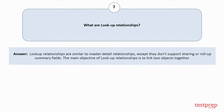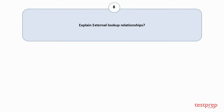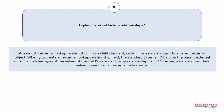Question number eight: Explain external lookup relationships. An external lookup relationship links a child standard, custom, or external object to a parent external object. When you create an external lookup relationship field, the standard external ID field on the parent external object is matched against the values of the child's external lookup relationship field. Moreover, external object field values come from an external data source.